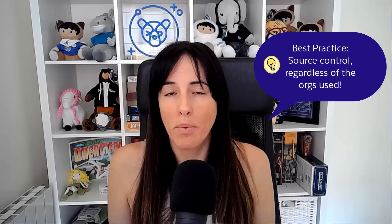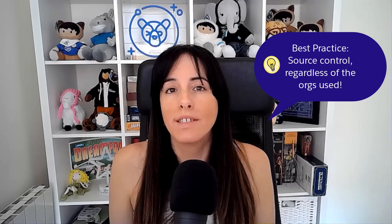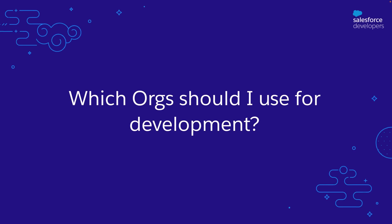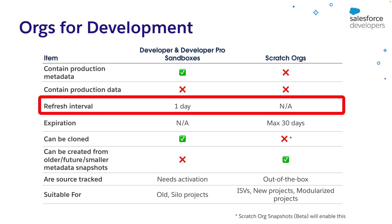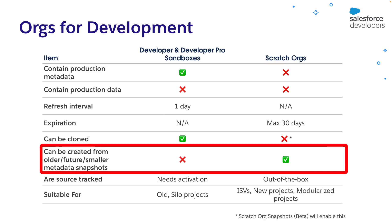Source control is a best practice and we will cover it in the second quick take of this series. Which orgs should you use for development? While having to deploy the metadata yourself adds complexity, scratch orgs increase agility. You don't have to wait for a refresh interval — you can spin up a new org instantly using the CLI. You have control of what you deploy, so you can easily deploy older versions or features that other developers are creating that are not in production yet. That is why scratch orgs are also great for automated, continuous integration processes.